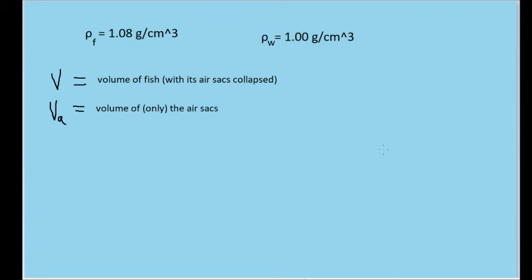Because the problem asks us to look for a fraction of the total expanded body volume, let's put the sum of the collapsed body volume and the expanded portion in the denominator as v plus v sub a. We're looking for the fraction of this volume that the fish must add. So in the numerator, we'll just have the volume of the air sacs, v sub a, because that's the expanded new portion of the fish's volume.